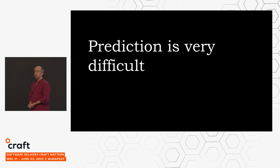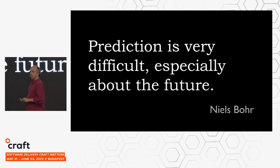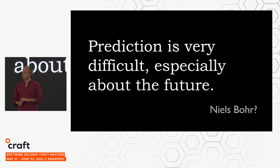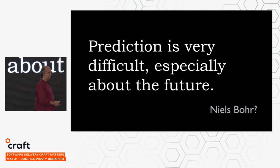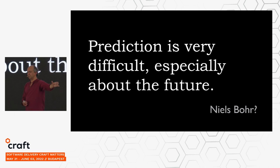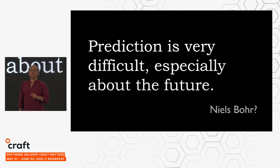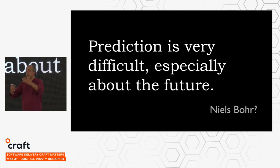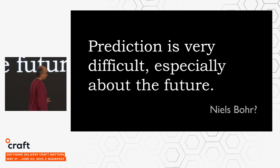We need to bring our maths and physics to the table. Prediction is very difficult, especially about the future. What I love about this quote is that we don't actually know who said it — I've always thought it was Niels Bohr, the Danish quantum physicist, but the internet says it could have been Yogi Berra, or Abraham Lincoln, or Einstein. We don't know who said this — and that was the past. If we can't predict the past, how are we going to predict the future?